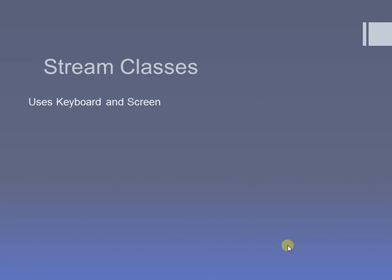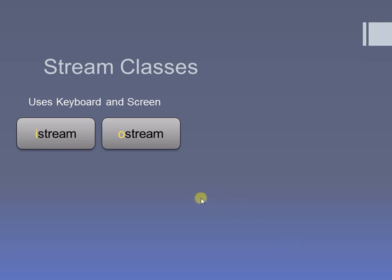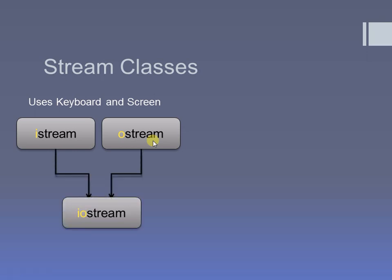Now I am going to explain these stream classes in a different way. The streams used to perform operations with the keyboard and screen are istream and ostream respectively. Together, iostream is the header file you use in C++, where cin and cout are used to take input from the keyboard and show output to the screen respectively.